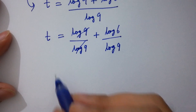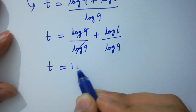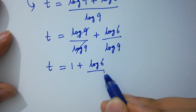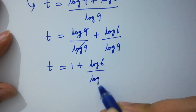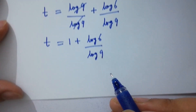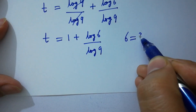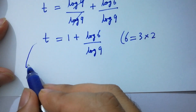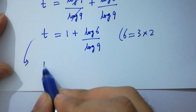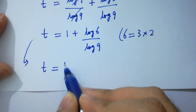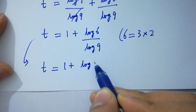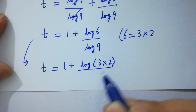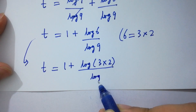t equals 1 plus log 6 over log 9. Now rewriting log 6 as log(3 × 2) over log 9.